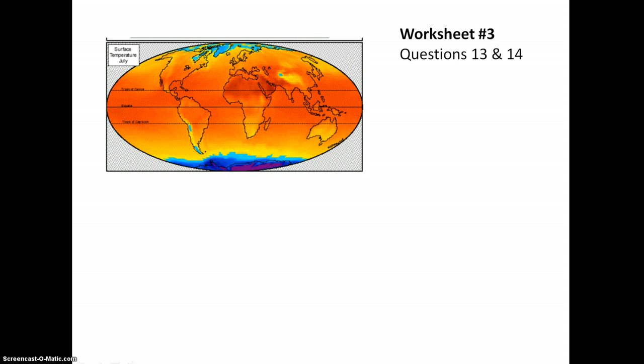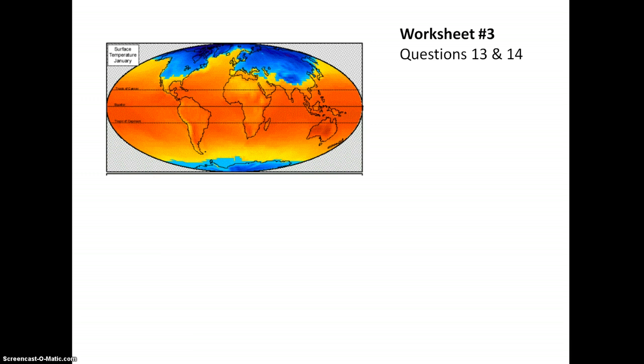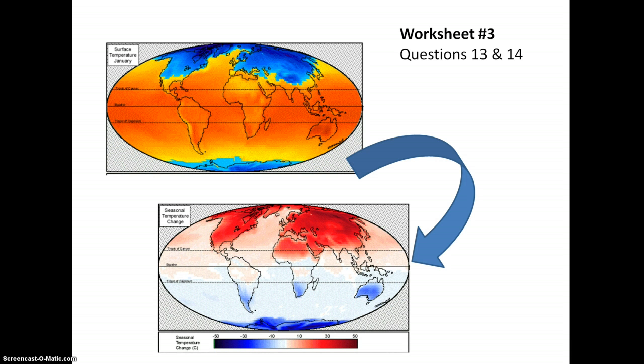Finally, let's look at Worksheet 3. This worksheet was created using a geographic information system and subtracting the January surface temperature from the July surface temperature. So, here's July, and we subtract January from it, and we get a map with different colors, which represent the amount of change between July and January.